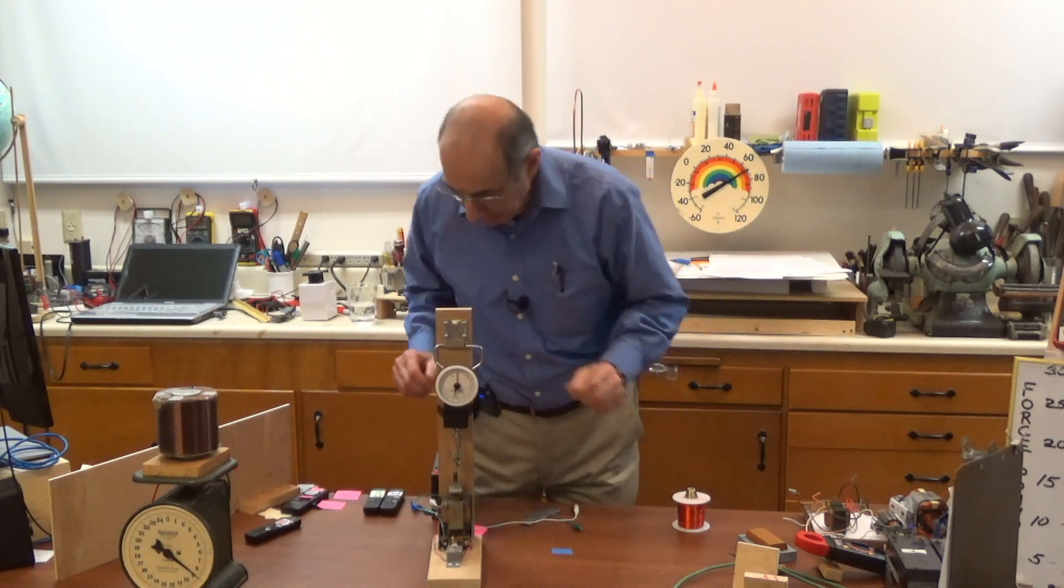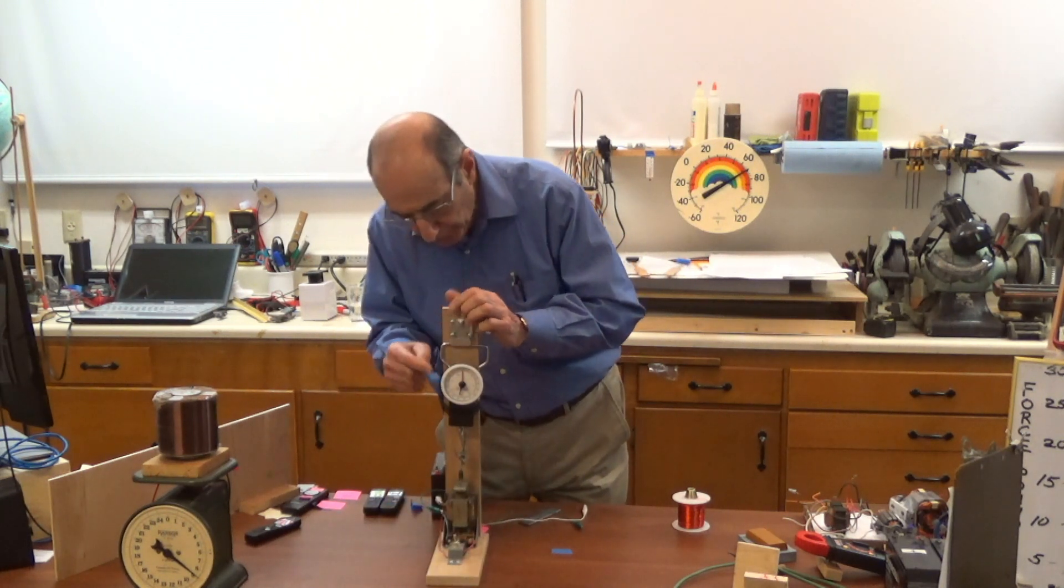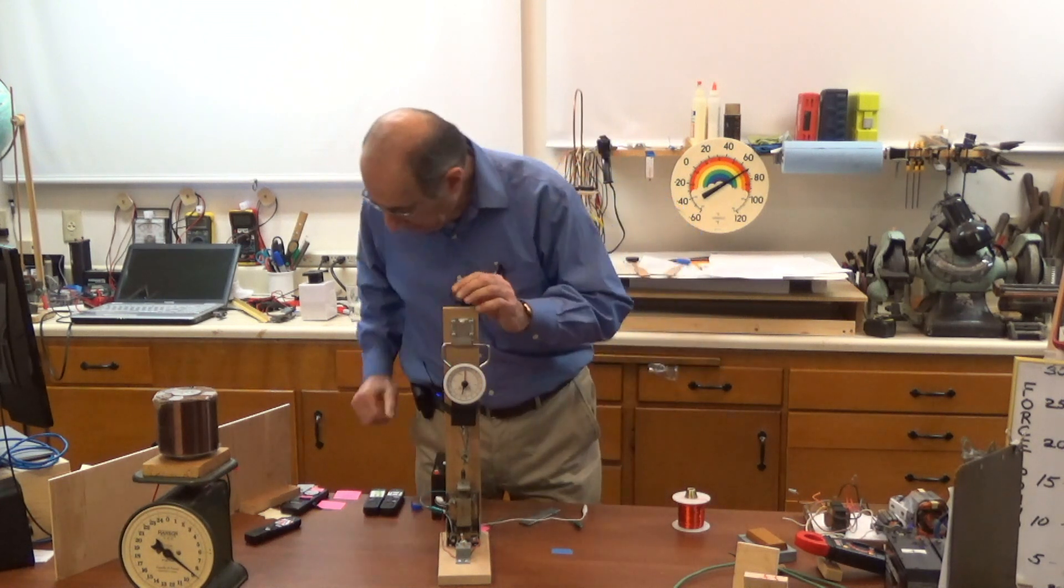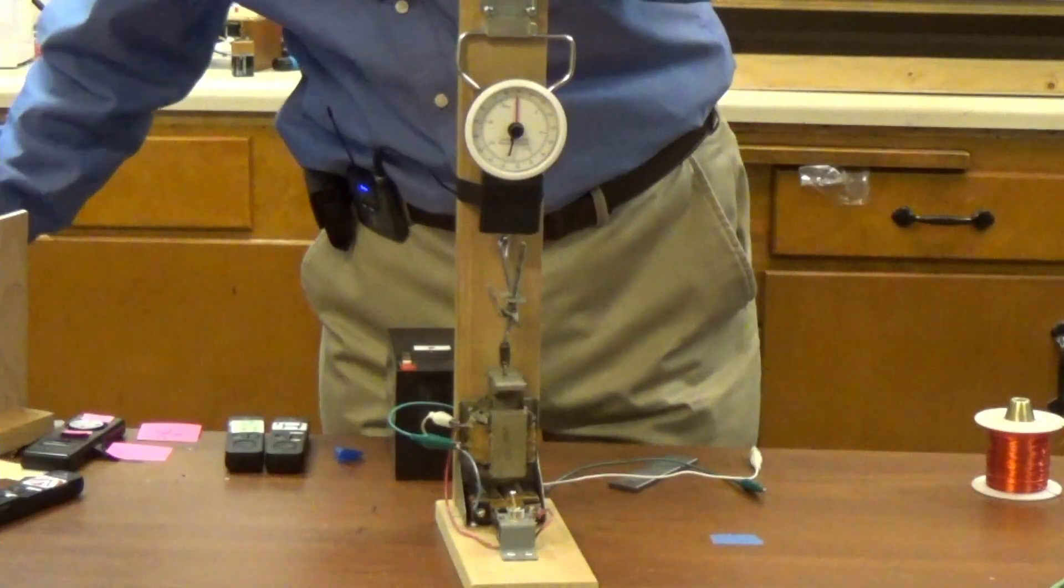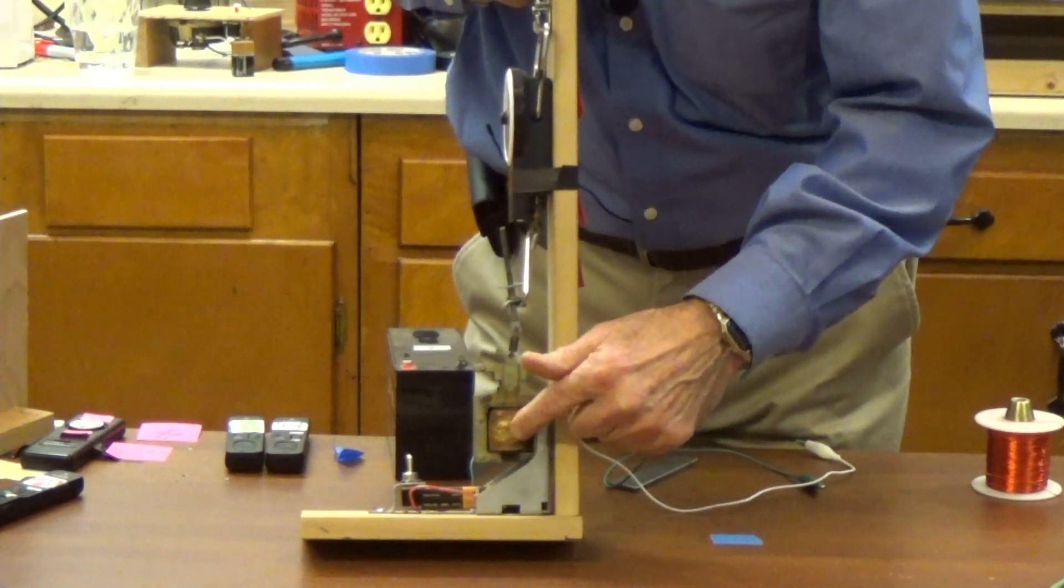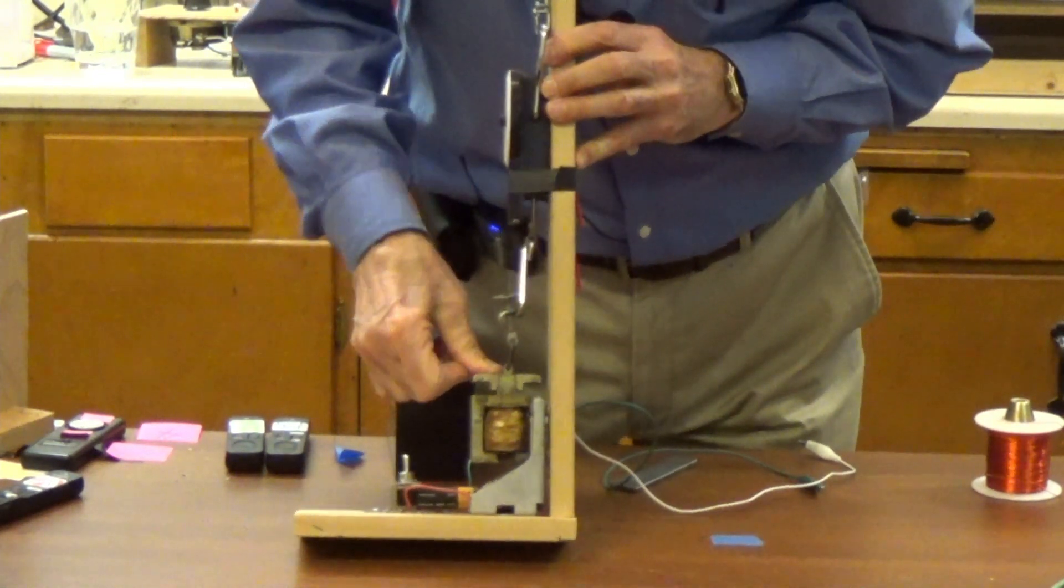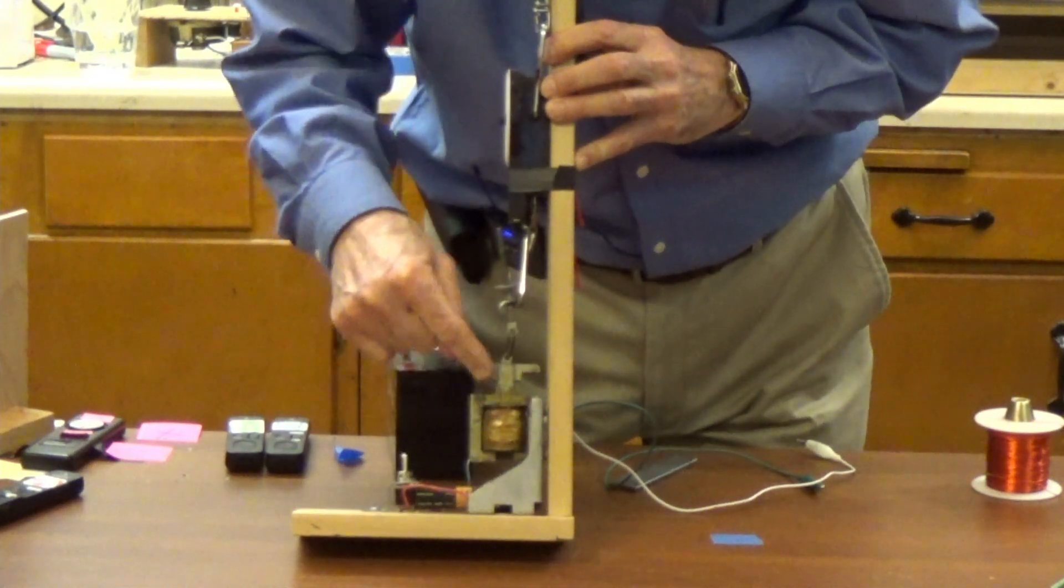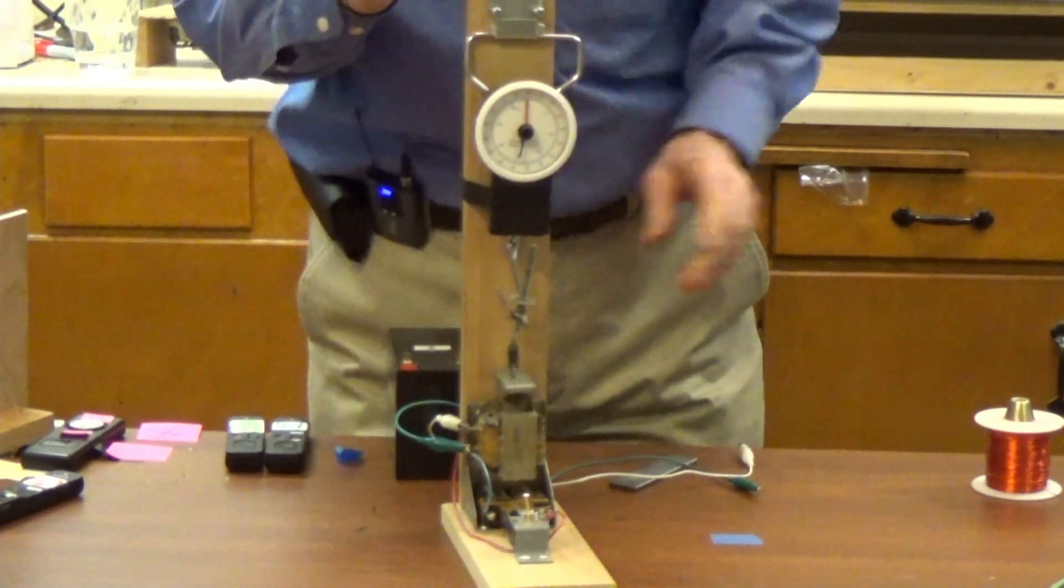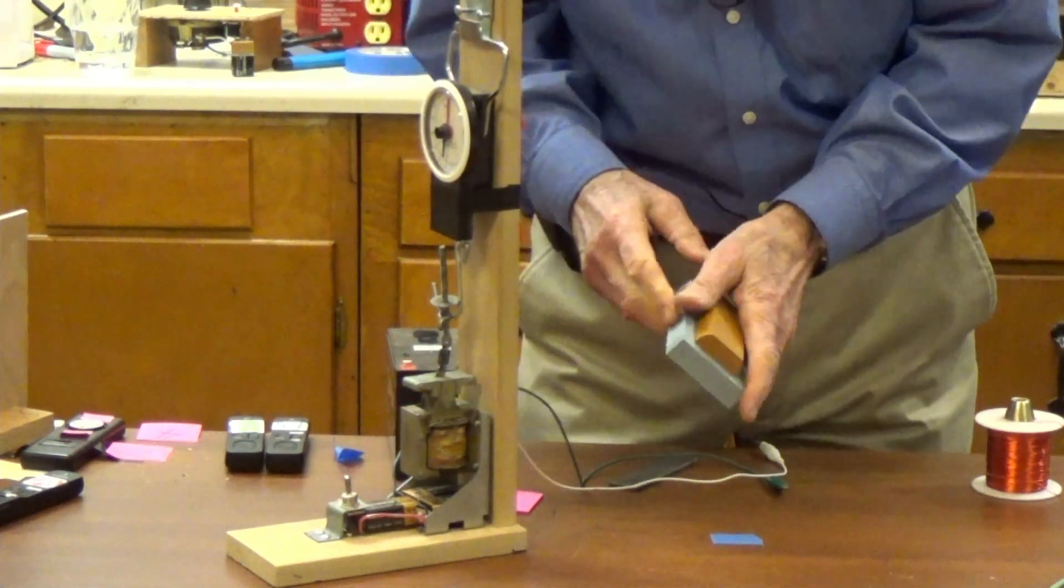So here is a little solenoid and I've got it connected to a gauge that measures force. Let's get a close-up of that. So here's the coil of wire, it's got a steel core plunger, a steel core and steel around the outside and it's connected to the scale. Now it's probably pretty hard to tell what's really happening here. So I have a little wooden model.